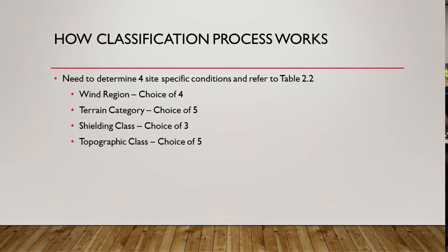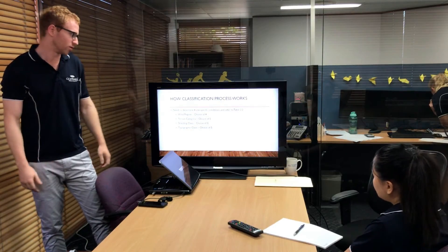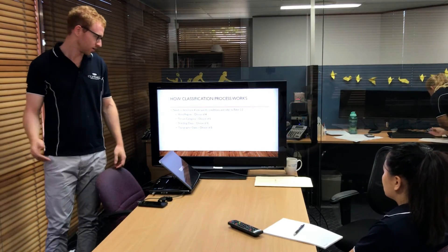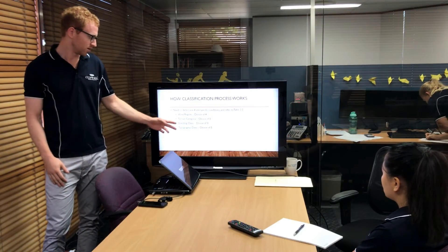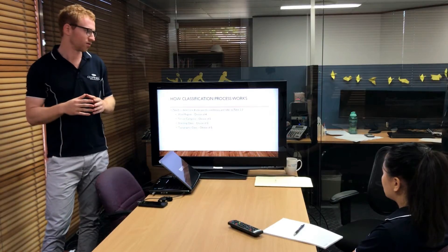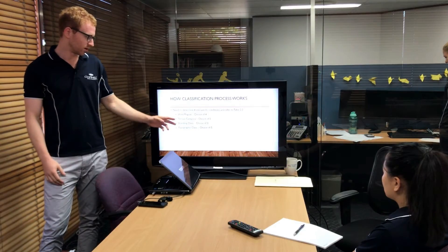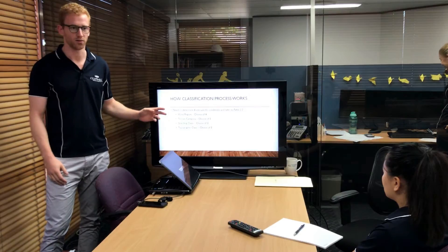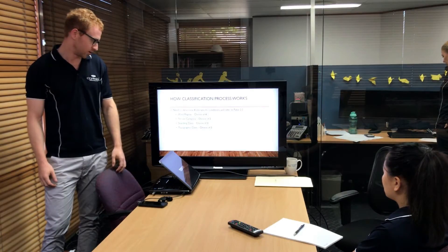So how the process works: you're trying to determine four separate metrics and then apply them into Table 2.2 of the code, which gives you an overall wind category. First, the easiest one is the wind region — you have a choice of four. Then terrain category — a choice of five — and then shielding class and topographic class. These last two are really what set AS4055 apart from AS1170 in terms of simplicity. In AS1170 you've got a whole bunch of equations, whereas in AS4055 it's just a table where you pick the most suitable metric.